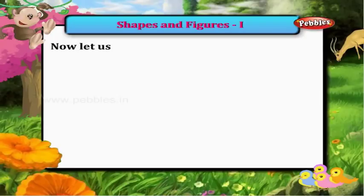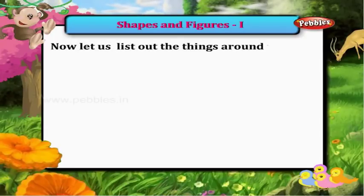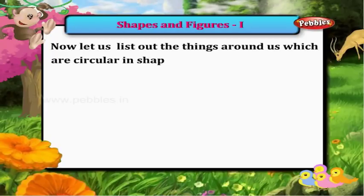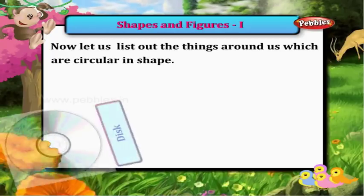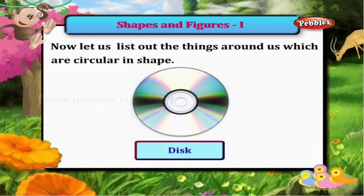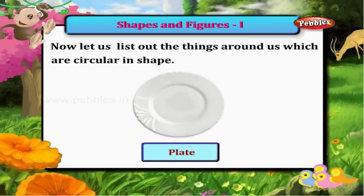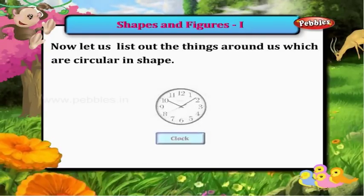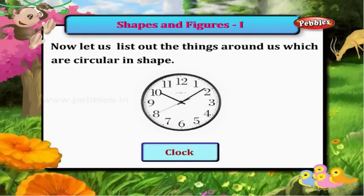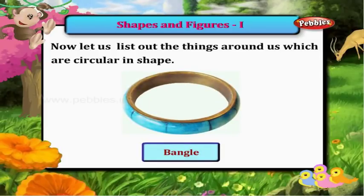Now let us list out the things around us which are circular in shape: a disc, a plate, a clock, a bangle.